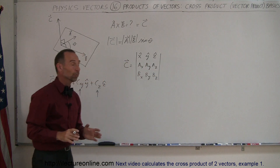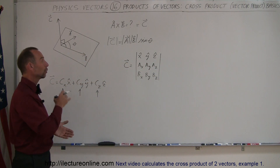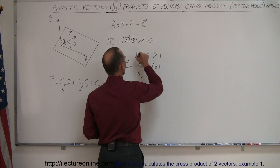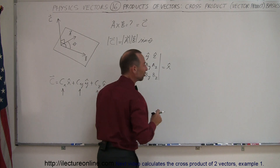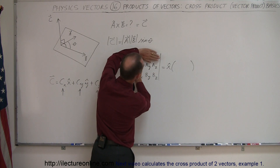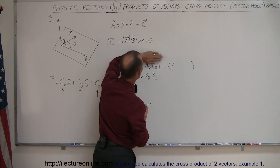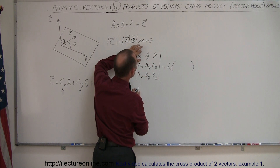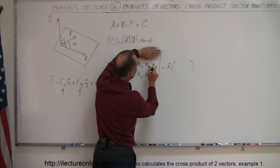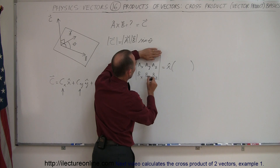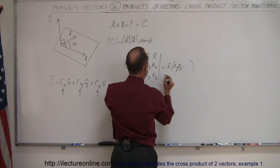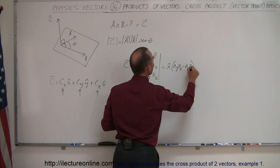Expanding the determinant, the first component is X hat times the remaining 2×2 sub-determinant after crossing out the first row and first column. That gives us A sub Y times B sub Z, minus A sub Z times B sub Y. This is the X component of vector C.